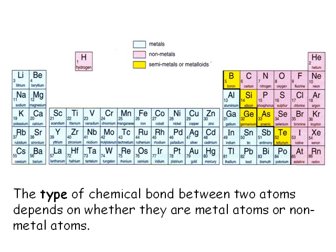The bonds which form between metal atoms are referred to as metallic bonds. The bonds which form between non-metal atoms are termed covalent bonds. And between metals and non-metals we find ionic bonds. Each type of bond is formed in a different way, so we need to study each in turn.